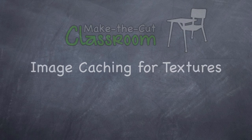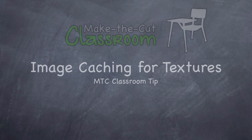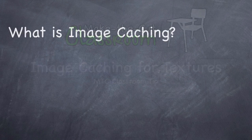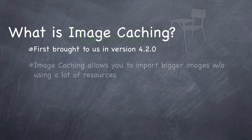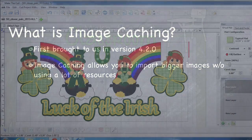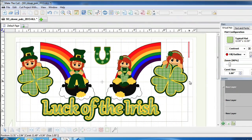This is a Make the Cut classroom tip when it comes to textures on your virtual mat. Hopefully this video will shed some light on a feature that you may not know was available to you. This feature is called image caching and was first brought to us in version 4.2. When you bring in a textured image that is 1,000 pixels wide by 1,000 pixels tall, this may actually bog down your program, which essentially makes it run slower.